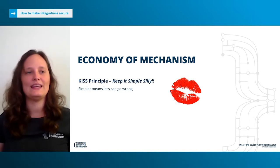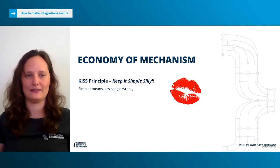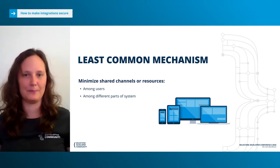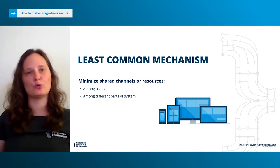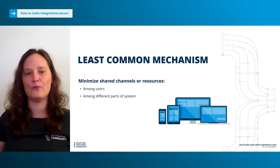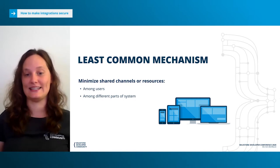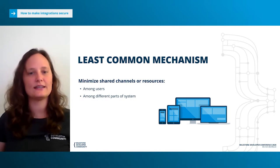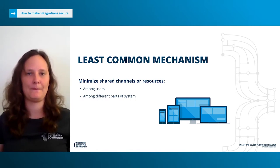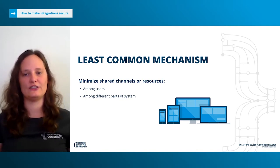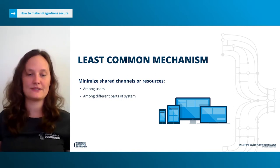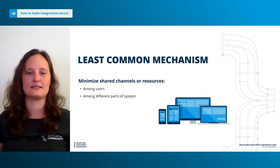The next principle is called Least Common Mechanism, and that one talks about how sharing should be minimized. Sharing resources provides a channel along which information can be transmitted. If one program can corrupt the shared state, it can then corrupt other programs that depend on it. A good example is the Hopwood interface attack, which combined a bug in the Java interface mechanism with a shared public variable that ultimately broke the type system and thus circumvented system security.